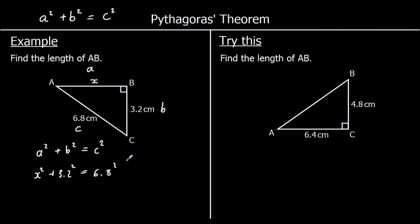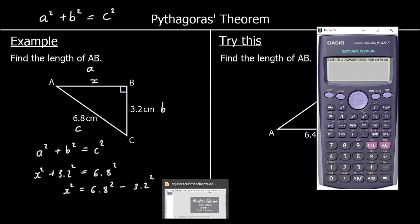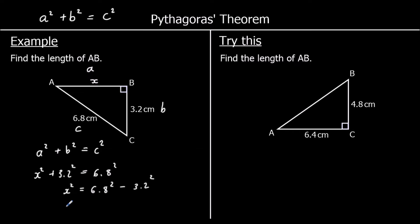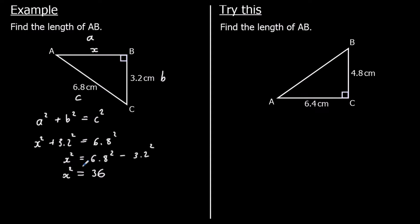To get x squared by itself, we take away 3.2 squared from both sides. So x squared is 6.8 squared take away 3.2 squared. We can type this in the calculator: 6.8 squared take away 3.2 squared is 36. So x squared equals 36. To get x by itself, we square root both sides — square root of 36 is 6. So x is 6 centimeters; AB is 6 centimeters long.